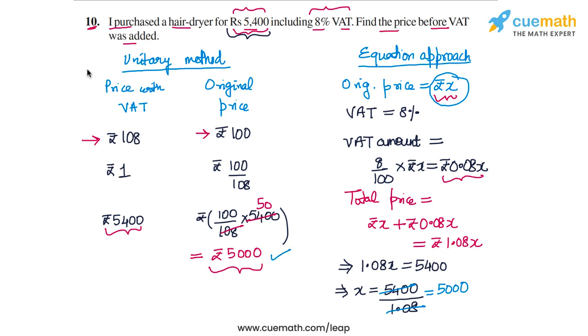To summarize, the answer to question 10 is that the price before VAT was added is rupees 5000. When we add a VAT of 8%, we get the total price of rupees 5400.